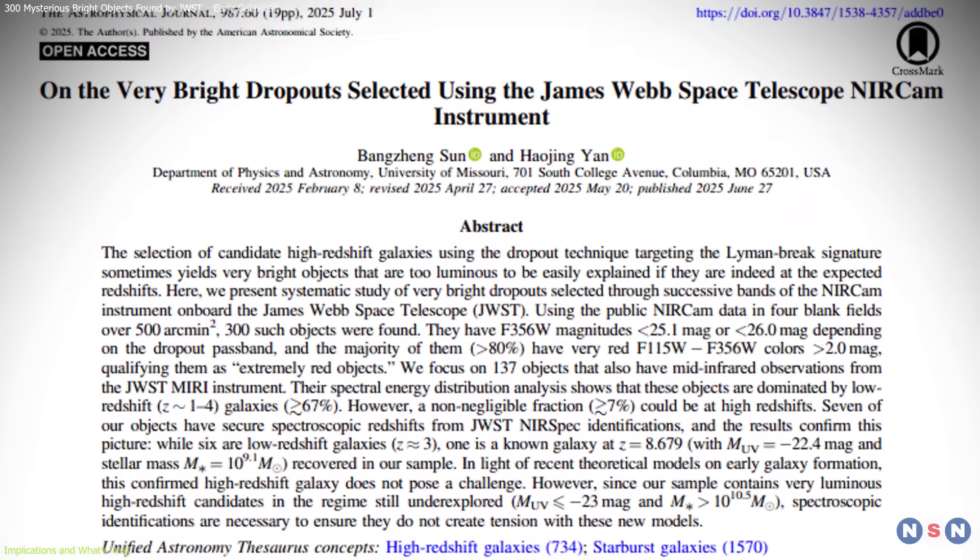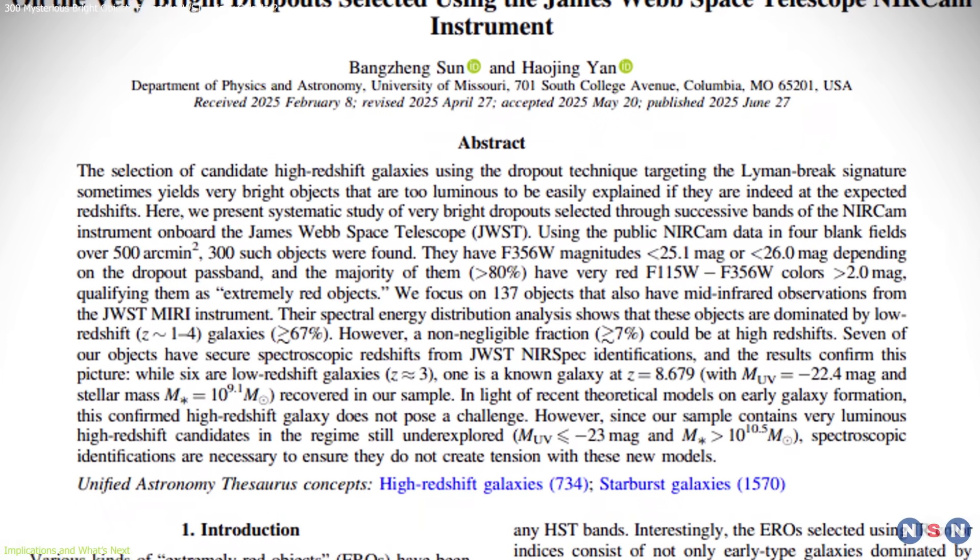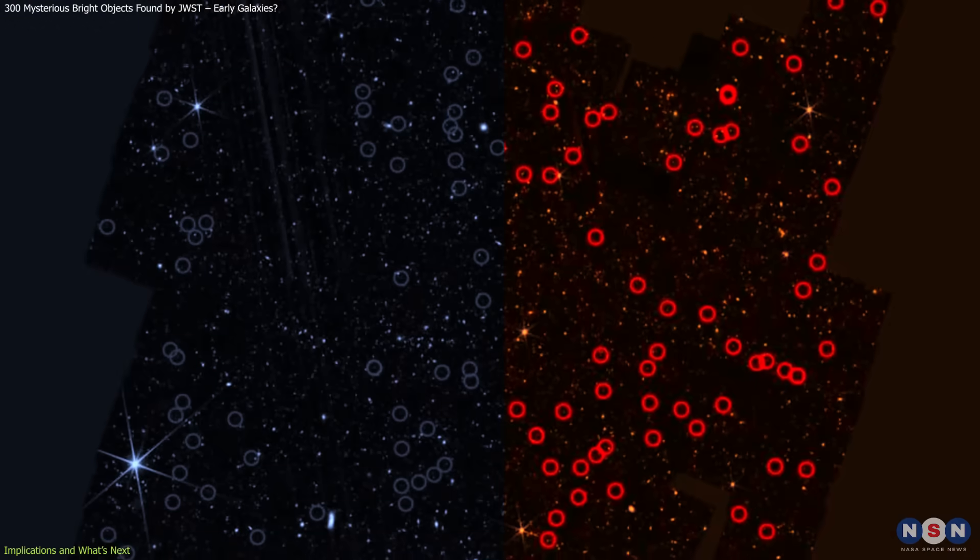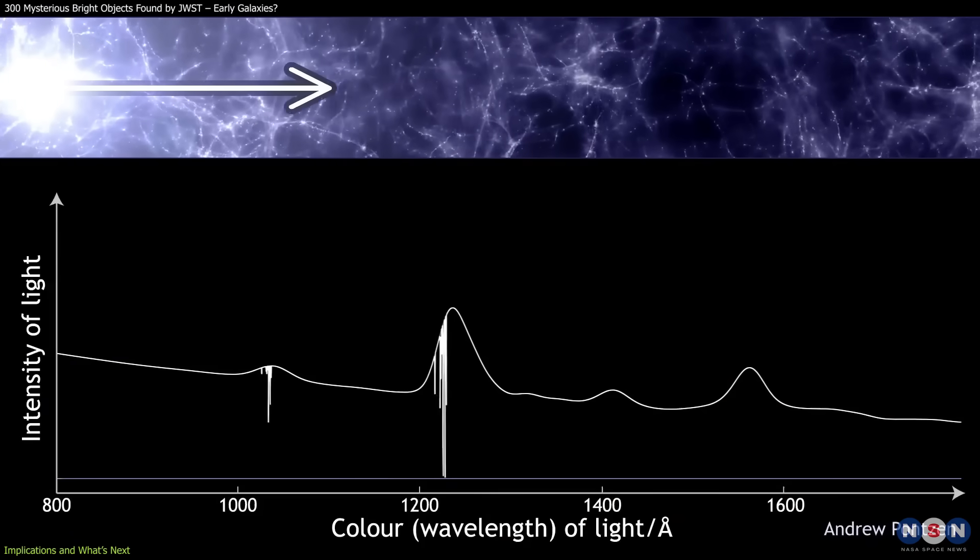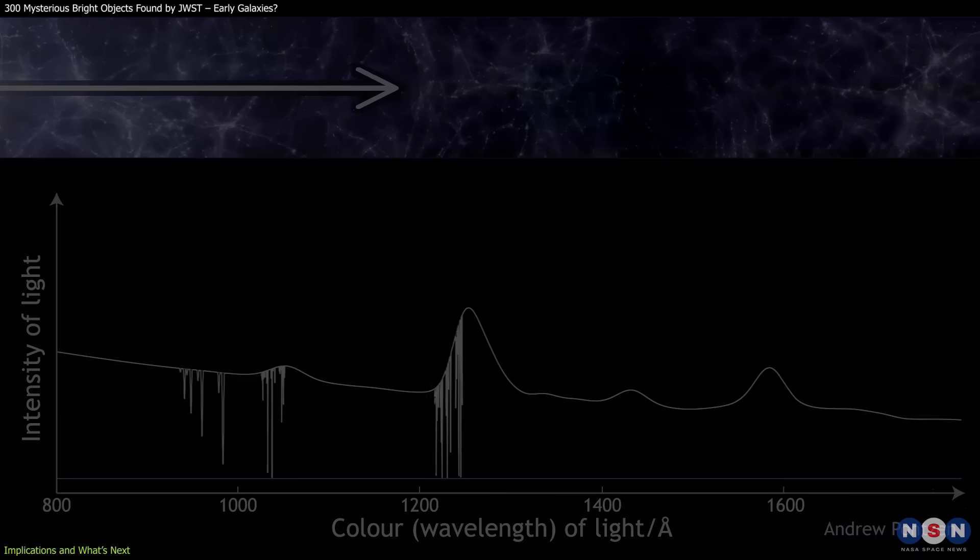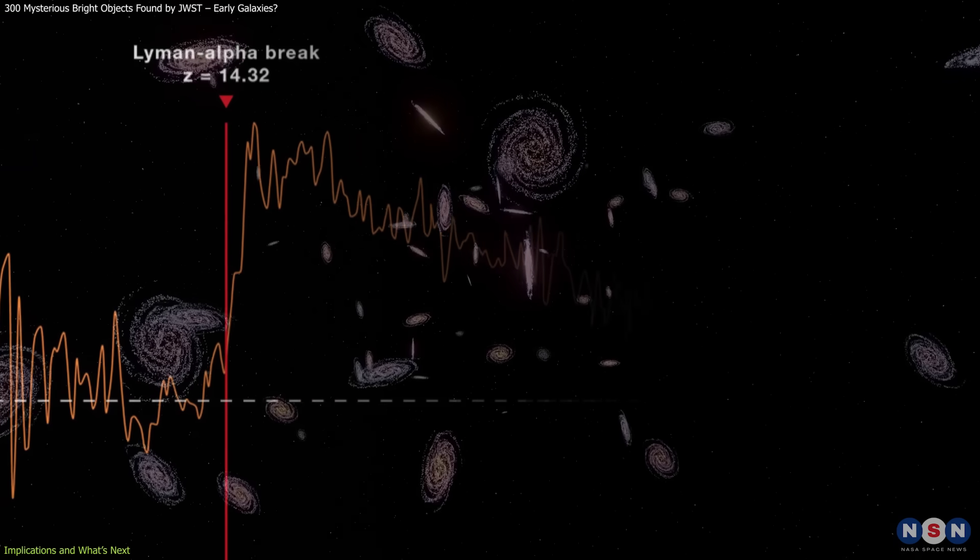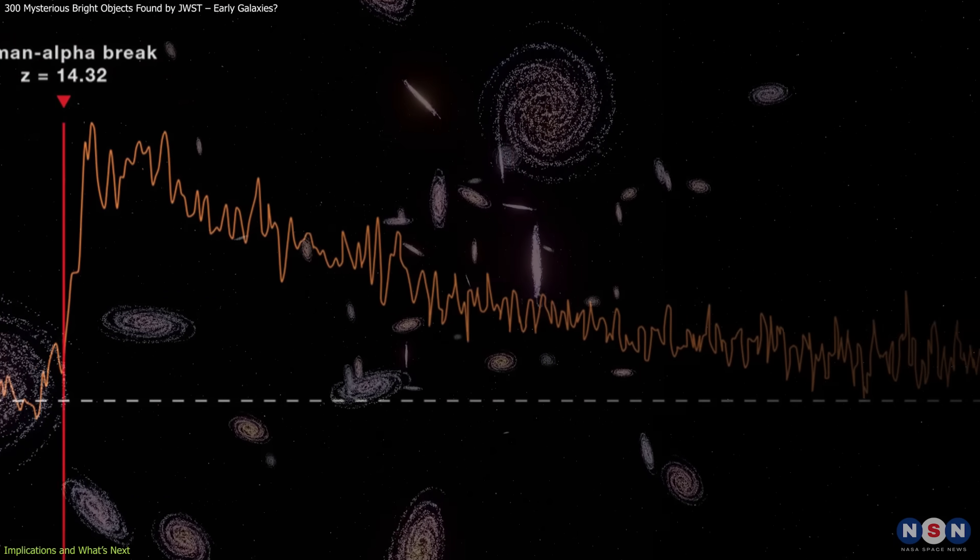The next stage for this research is spectroscopic confirmation. While photometric methods like dropout selection and SED fitting are valuable for building candidate lists, spectroscopy is the gold standard for confirming an object's distance and properties.